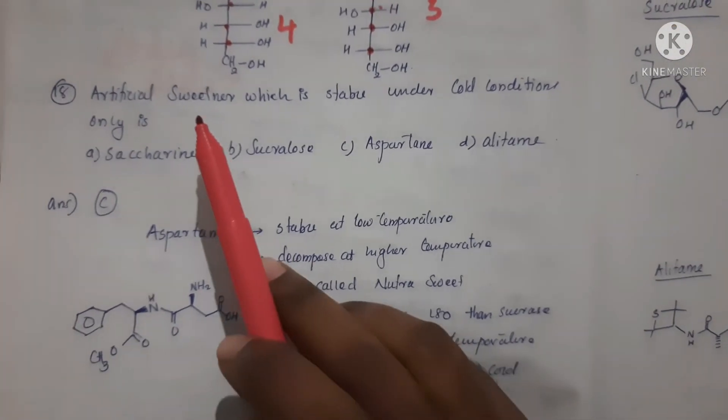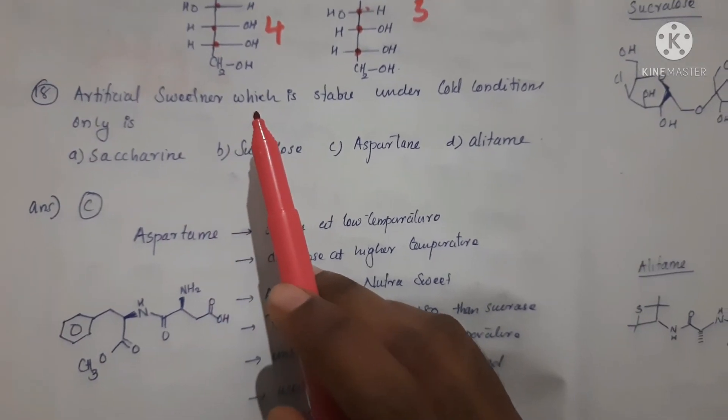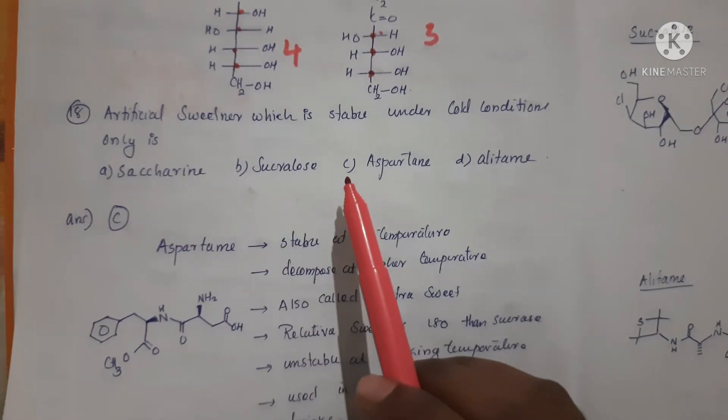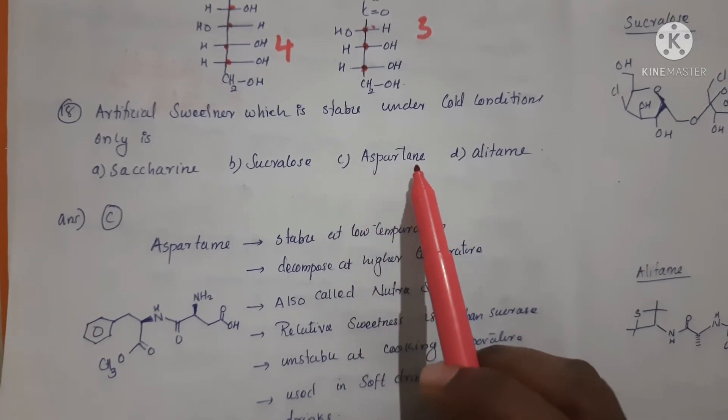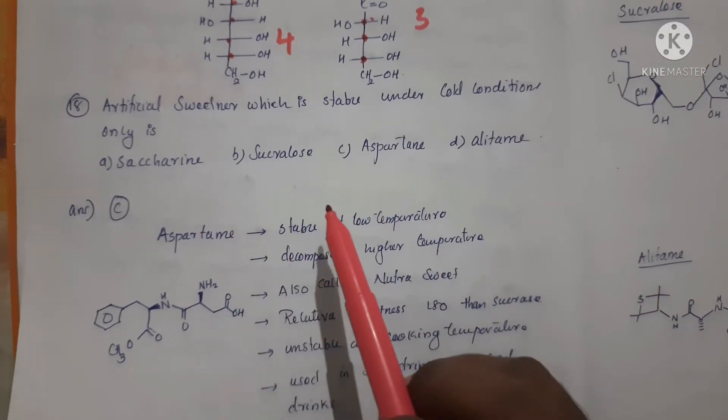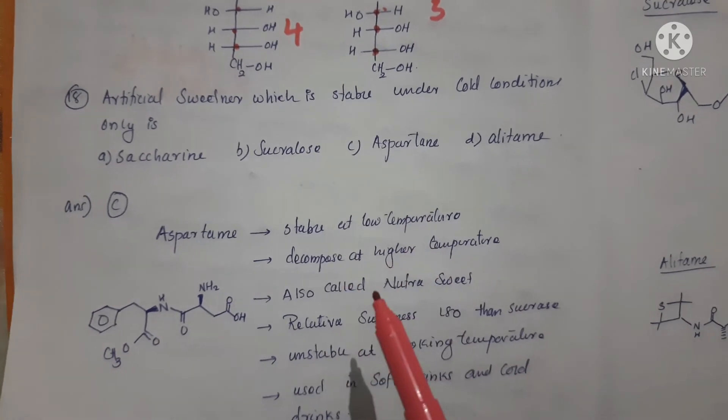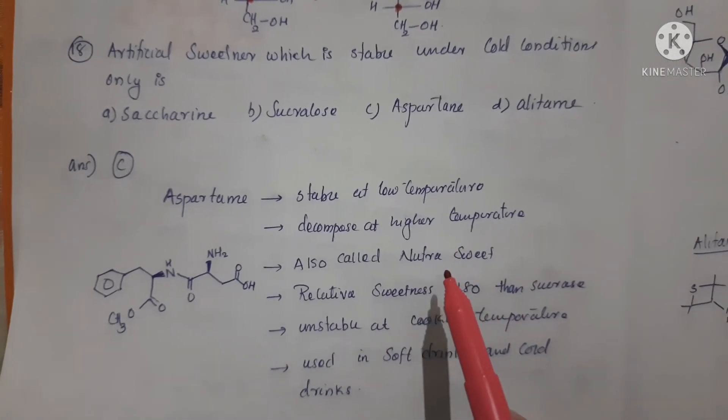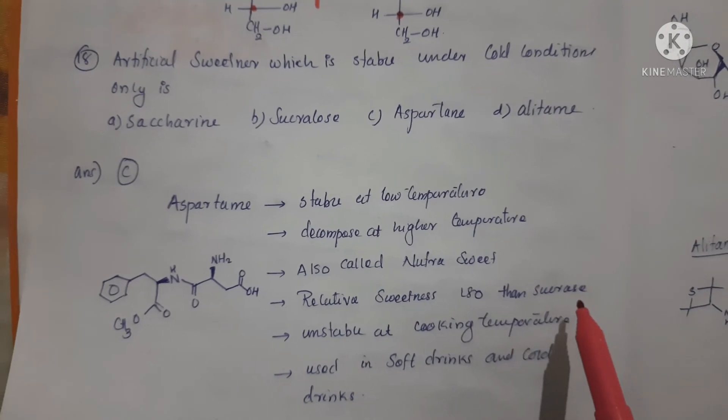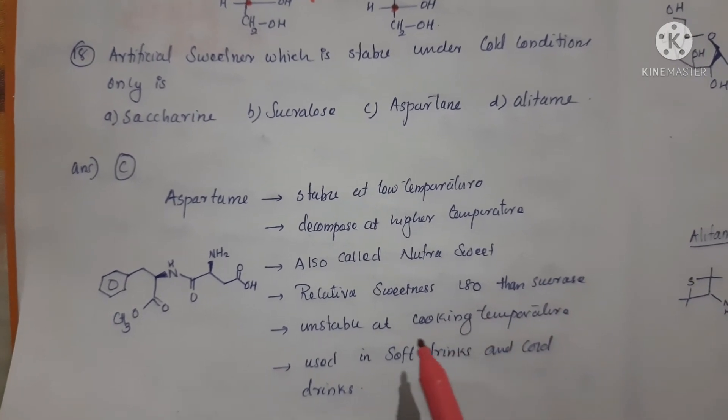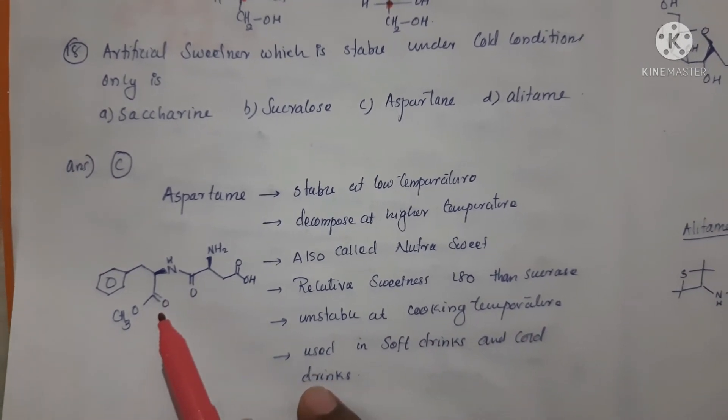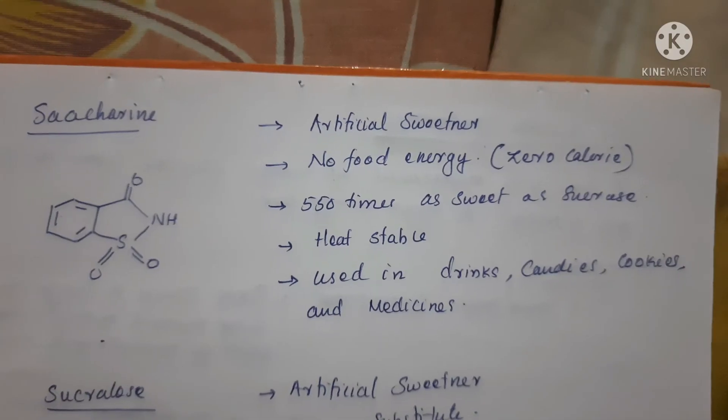Next question: artificial sweetener which is stable under cold conditions only is - Option A: saccharine, Option B: sucralose, Option C: aspartame, and Option D: alitame. Correct answer is Option C, aspartame. It's stable at low temperatures, decomposes at very high temperature, and also called NutraSweet. It's around 180 times sweeter than sucrose and stable at cooking temperature. It is used in soft drinks and cold drinks. Here is the structure of aspartame.